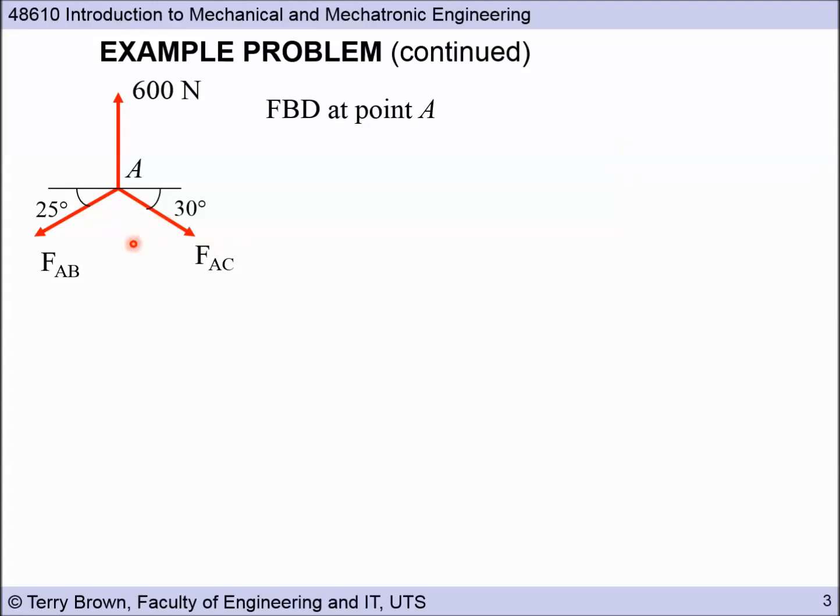Okay, so our free body diagram will look something like this. We identify particle A, we put on the force that we know, so 600 newtons is the force that we know, and our forces in our cables or our ropes, those forces will be acting along the line of the ropes. So we put in here the force arrow indicating that, and we also label our unknown forces. Here we have force in rope AB, so we'll call that force subscript AB, and we'll put in here our 25 degrees that were given in the information. Here we have our force in the other rope AC, so we've called that force subscript AC.